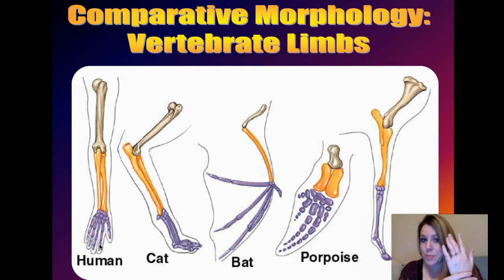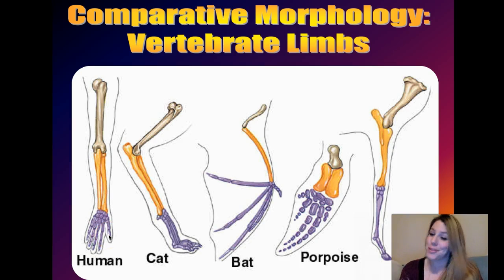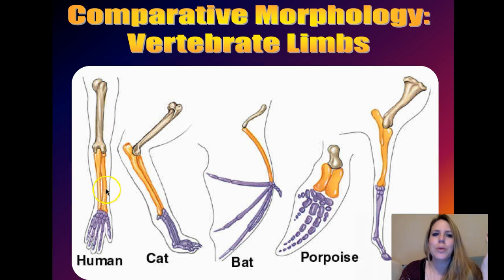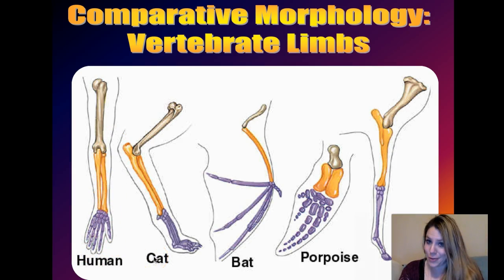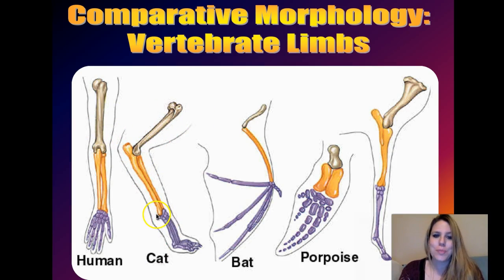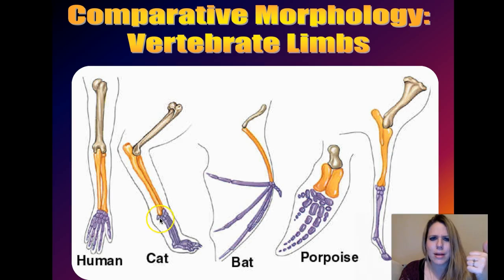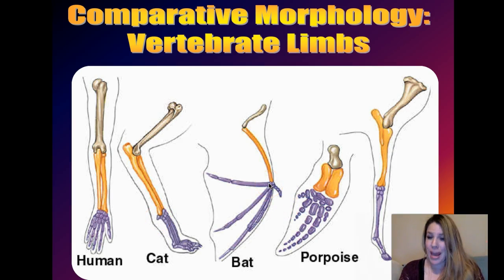We have our wrist bones and our finger bones. So: one bone, two bones, a bunch of little bones, and fingers. Take a cat — same bone here: humerus, radius-ulna, wrist bones, finger bones. You might wonder what happened to the thumb bone — it becomes the dewclaw. Then you look at a bat, which is also a mammal: same humerus, though there's been a loss of the second bone in the forearm.